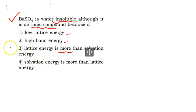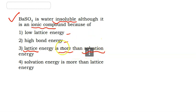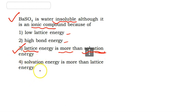For a substance to dissolve, solvation energy must be more than lattice energy. So our correct answer will be option 4: solvation energy is less than lattice energy, making Barium Sulphate insoluble.